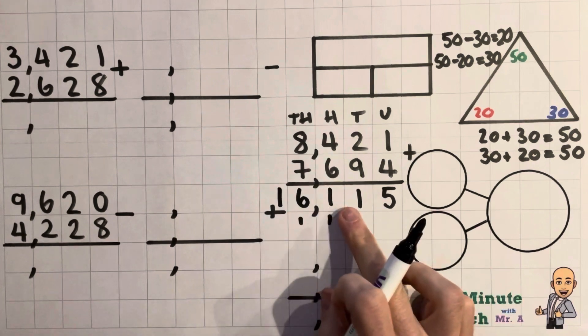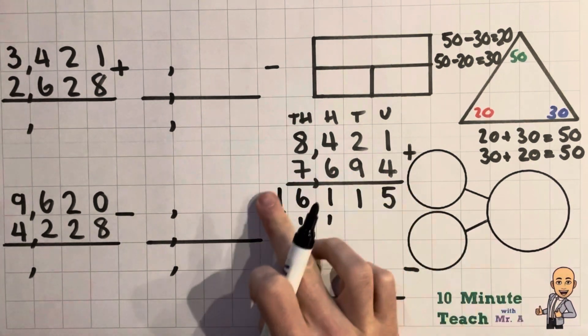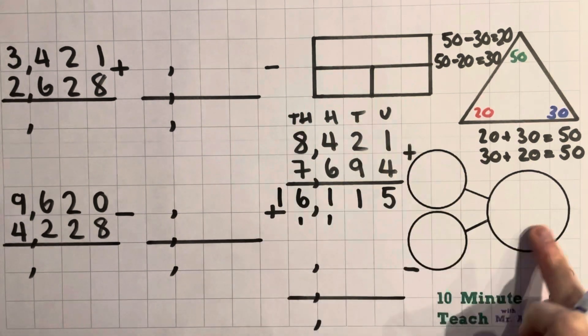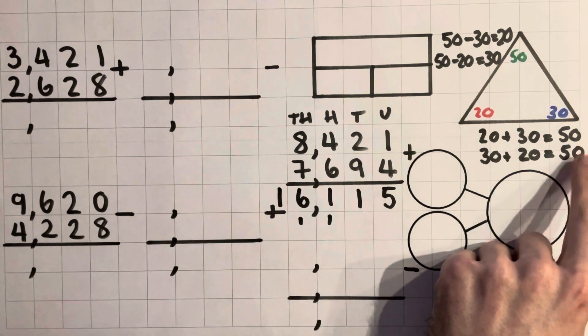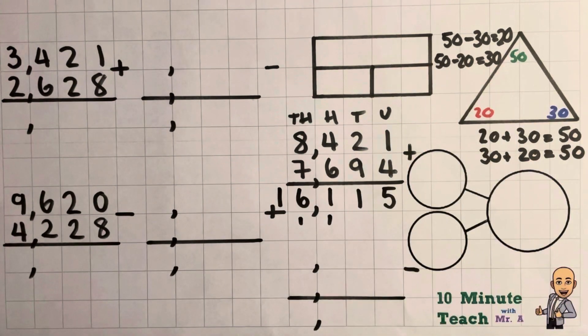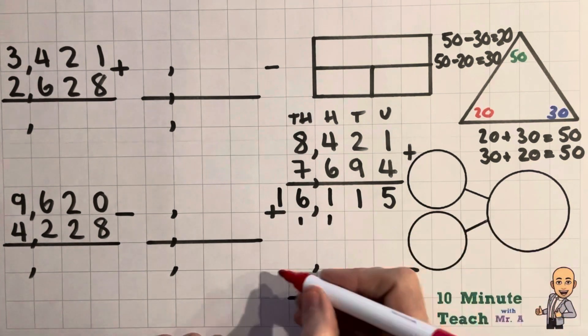So 16,115. So we're going to use this to help us out filling in our bar model and our part whole model. So with a subtraction you always start off with the largest number. So that's our answer just like over here from our triangle that we used earlier. So here we are.